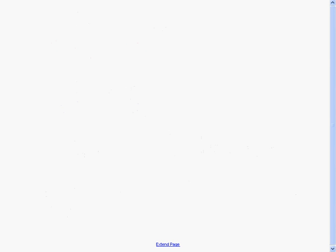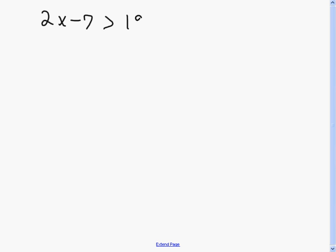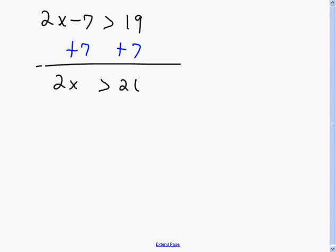The next example, Example 4 on the bottom of page 80: 2x minus 7 is greater than 19. Solving it just like any equation, I add 7 to both sides to get 2x is greater than 26. Then I divide by 2. Since I divided by a positive, nothing happens to my inequality sign. So x is greater than 13.